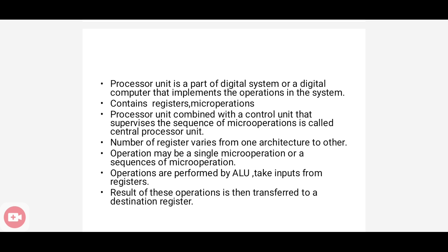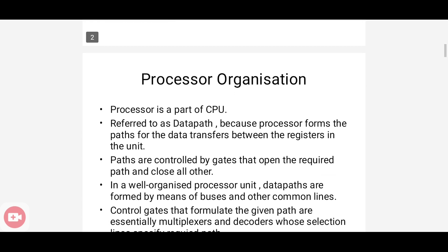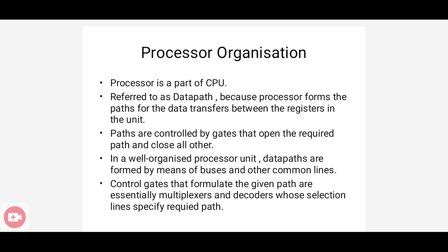We are here to study how to design the processor unit. The processor is a part of a CPU — central processing unit — and it is referred to as a data path because the processor forms paths for data transfer between the registers. In normal processor organization, these data paths are controlled by gates, but in a well-organized processor unit, these data paths are formed by means of buses and other common lines.